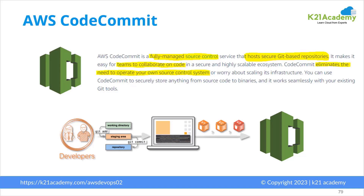Let's begin with the first tool developers will use: CodeCommit. CodeCommit is similar to Git or SVN — a code versioning system. It is a fully managed source control that hosts a secure Git-based repository, making it easy for teams and multiple developers to work and coordinate with each other. CodeCommit eliminates the need to operate your own source control system.